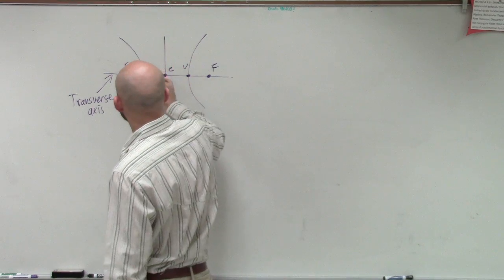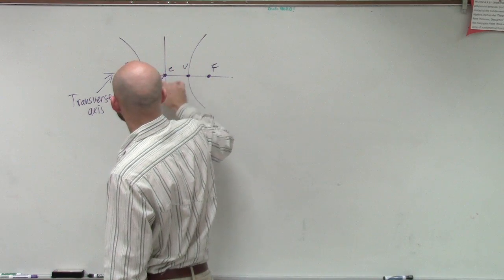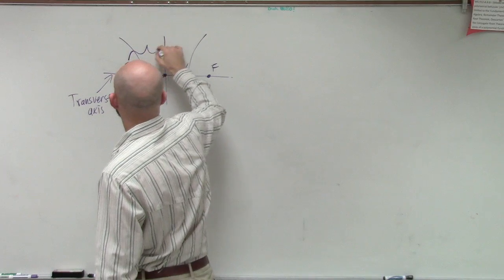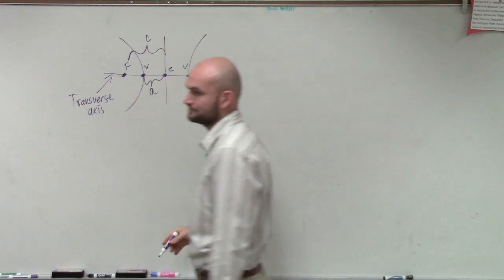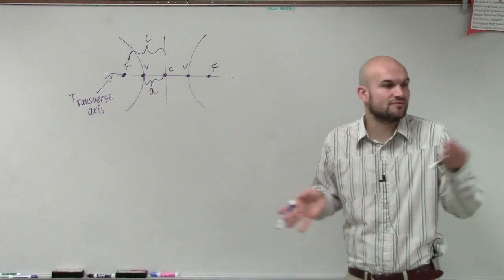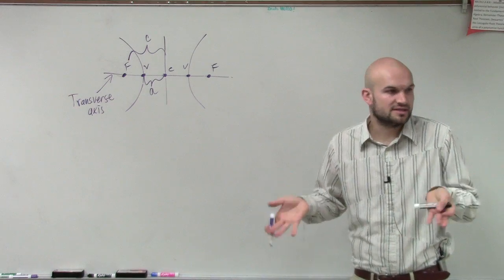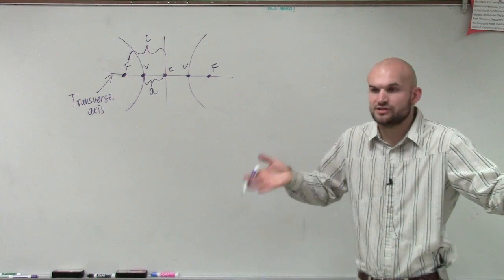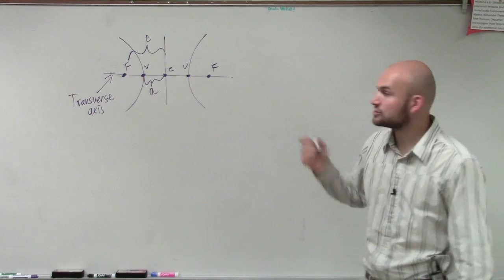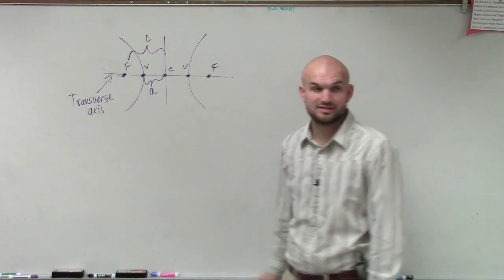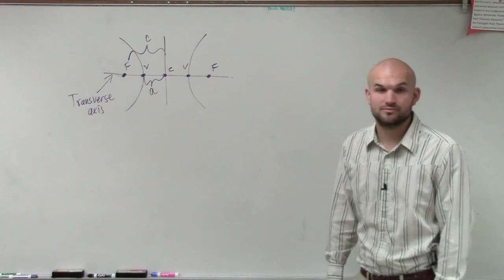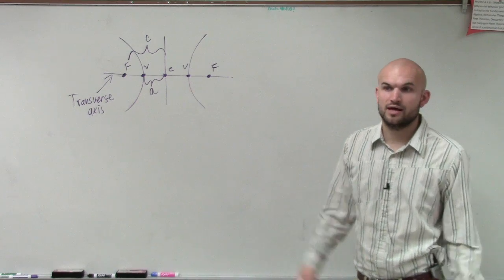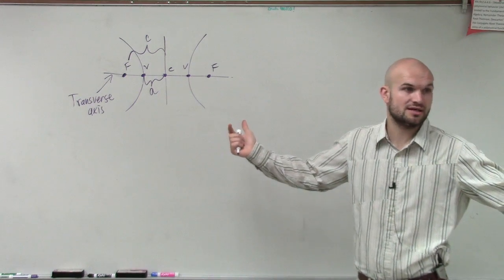Notice, ladies and gentlemen, this distance is A and this distance is C, just like when we had an ellipse. Remember an ellipse, the distance from the foci to the center was C? The distance from your vertices to your center was A? It's the same thing. Just notice now that A is smaller than C. It's always going to be that way. Rather than an ellipse, A was always larger than C.